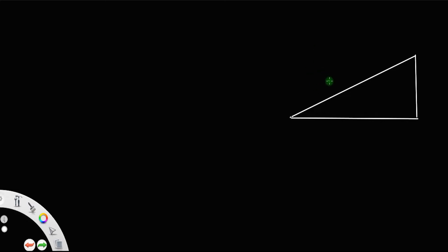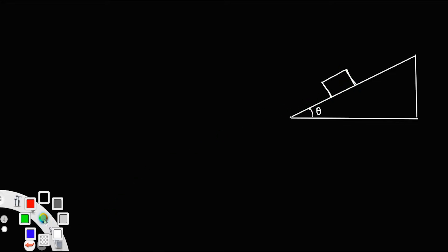Let us look at the case in which the work done by a force to move a body of mass m down the inclined plane. Suppose this is an inclined plane of inclination theta, and let a mass m be placed on the inclined surface. The different forces acting on this mass are as we discussed before.